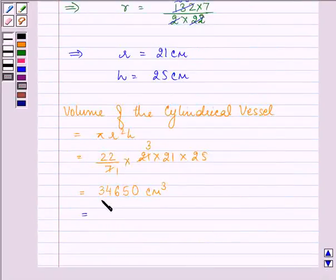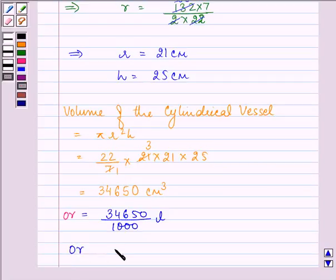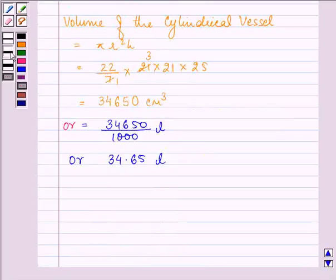So that means converting cm³ into liters, we just need to divide 34650 by 1000 and it will get converted into liters. So the answer is 34.65 liters of water this cylindrical vessel can hold.